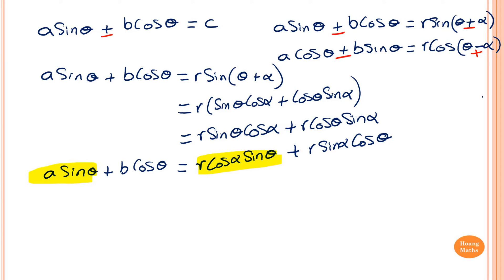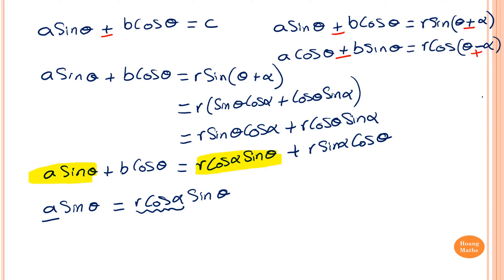Now remember alpha is a constant, so cosα is a constant, and so is A. Comparing the two terms: a·sinθ is the same as r·cosα·sinθ. The coefficient of sinθ on the left is A, and on the right is r·cosα. So therefore A = r·cosα. Let's name this equation number one.